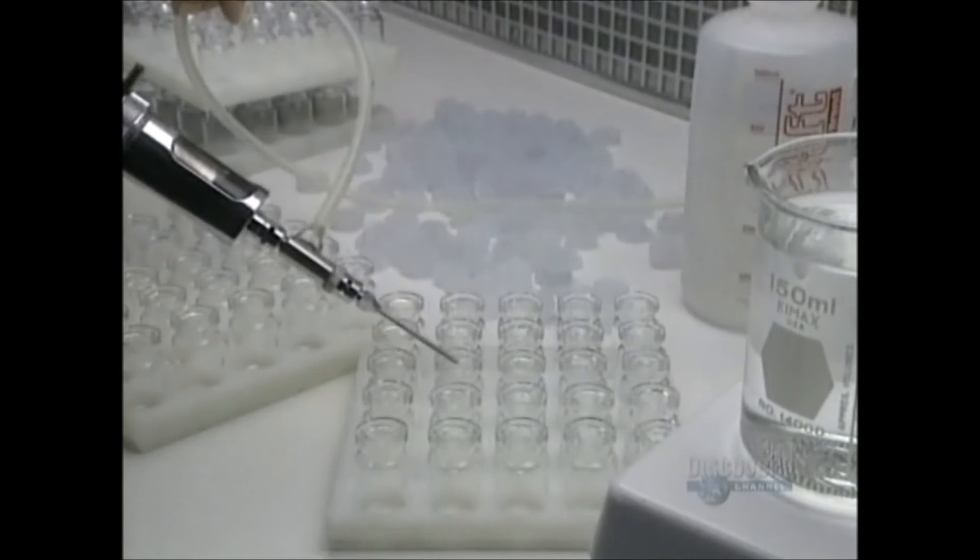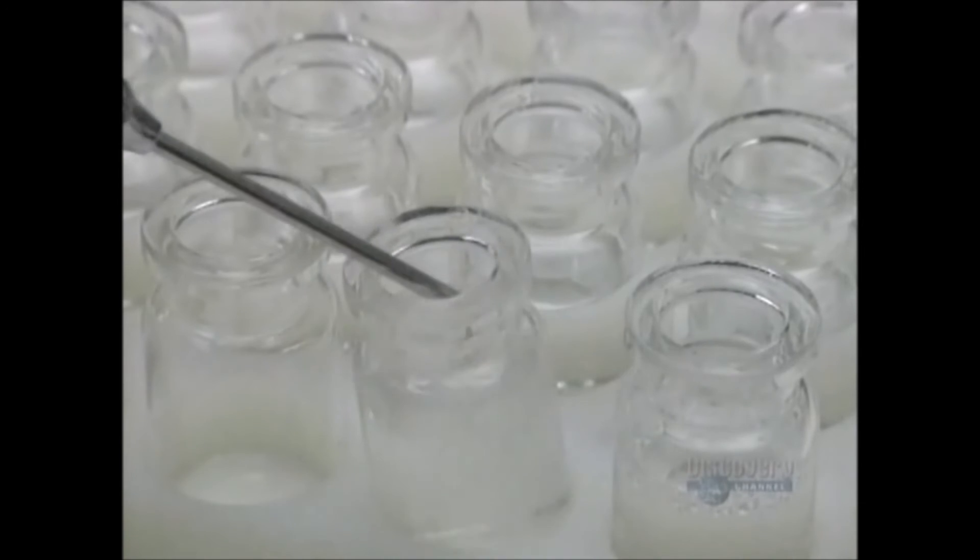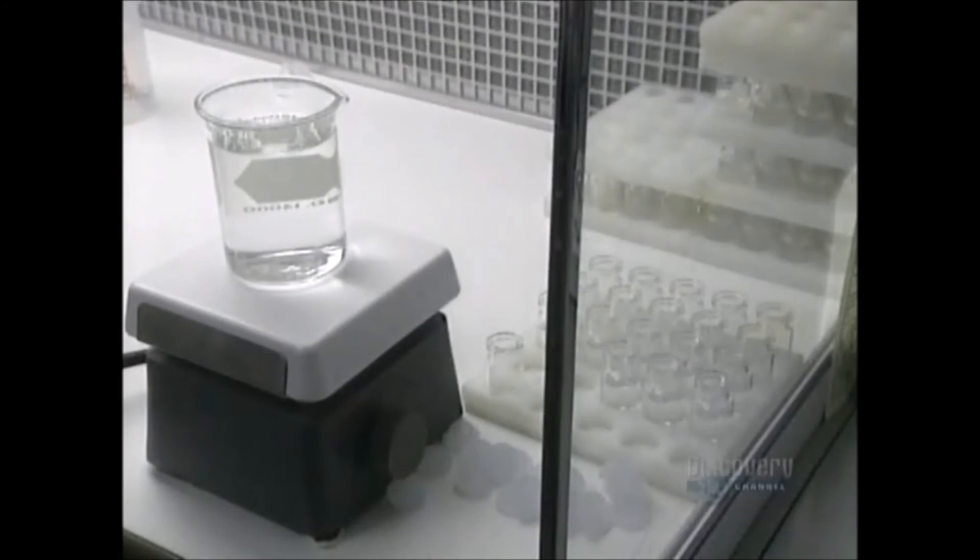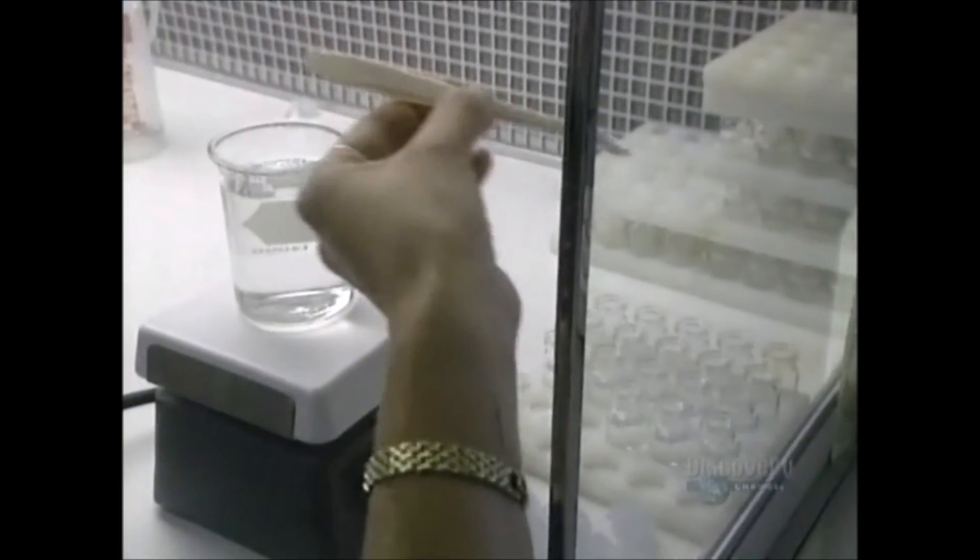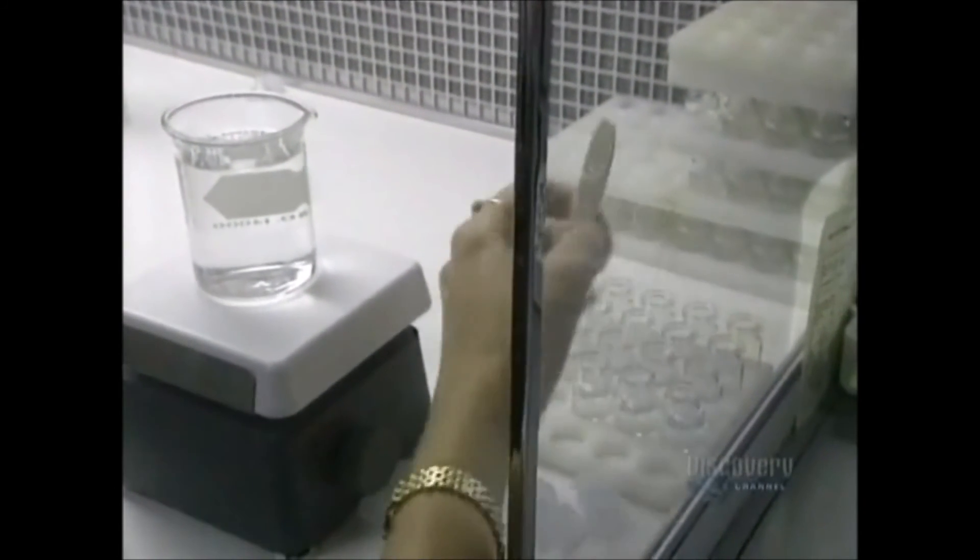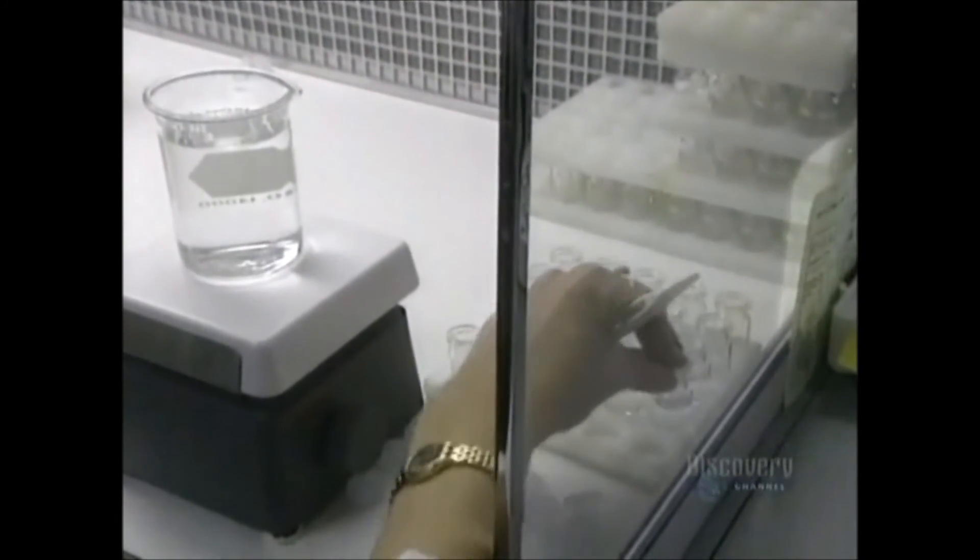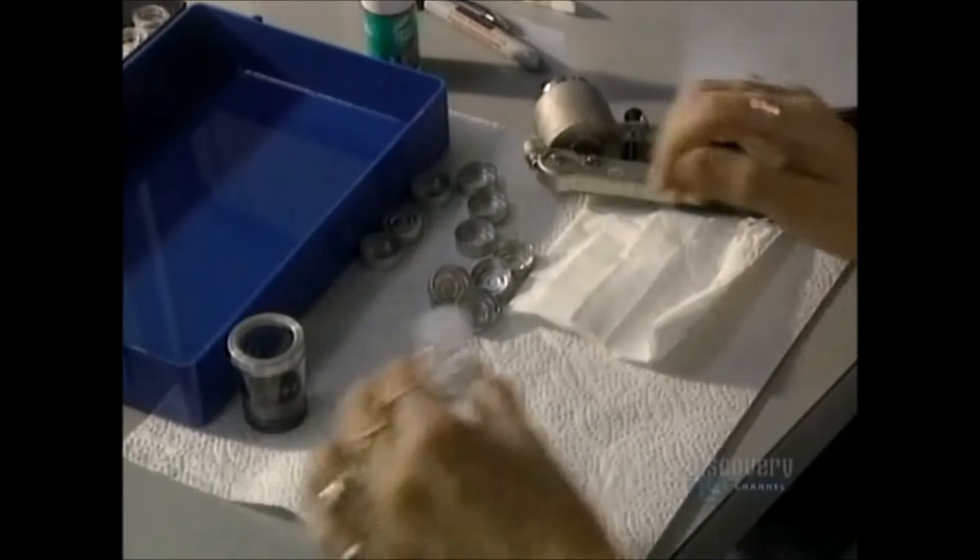The lenses are now completed and are cleaned, and they're stored in containers filled with a salt solution. This little vial that we find at the optometrist is perfectly sealed with a silicone cap and another of aluminum.